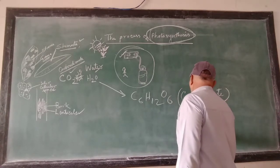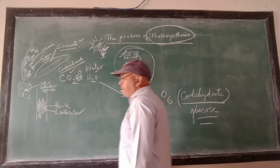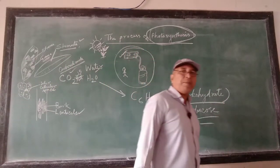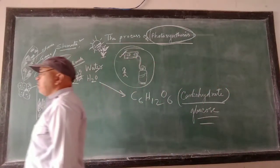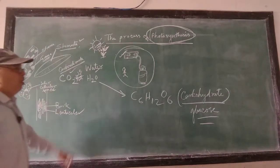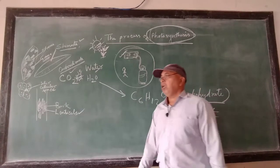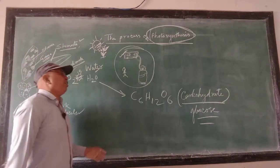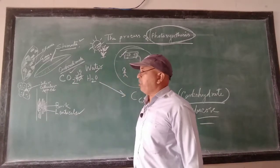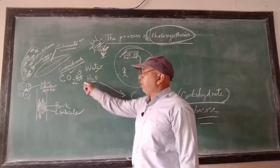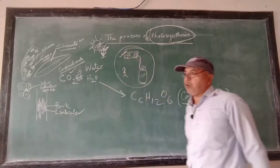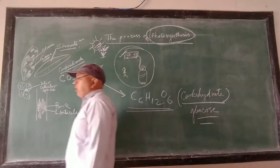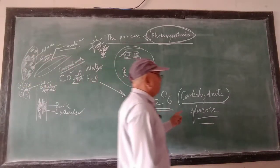This is carbohydrate, also known as glucose. So the green plants, with the help of the grana present in the chlorophyll — that is, the chloroplast in the green parts of their body — they trap the sunlight and pack it using carbon dioxide and water molecules, forming a new chemical molecule that is known as carbohydrate.